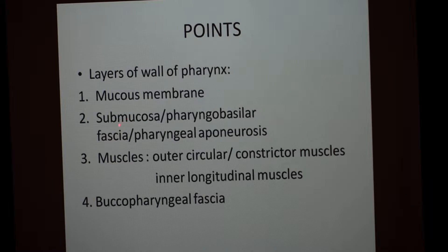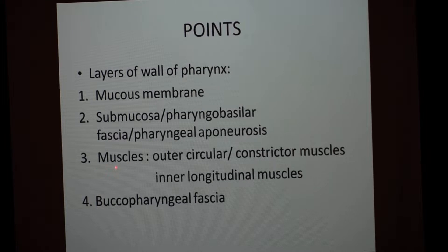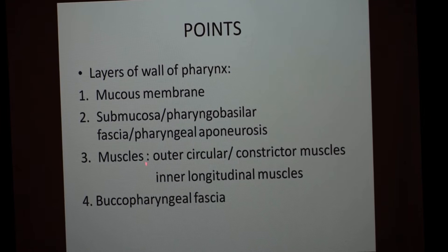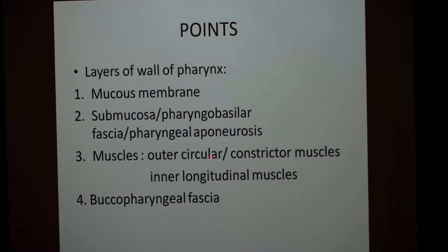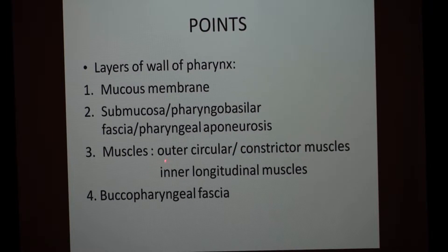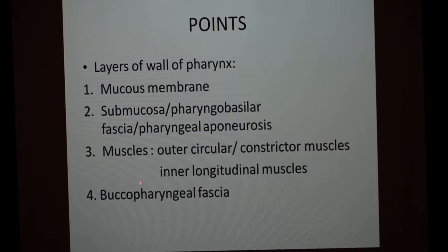Just outside the mucosa is the second layer, known as submucosa or pharyngeal aponeurosis — all three are synonyms. The third layer is the main muscular layer, which has two types of muscle: inner longitudinal muscle and outer circular or constrictor muscle. The outermost layer is known as buccopharyngeal fascia. These are the layers from inside to outside.